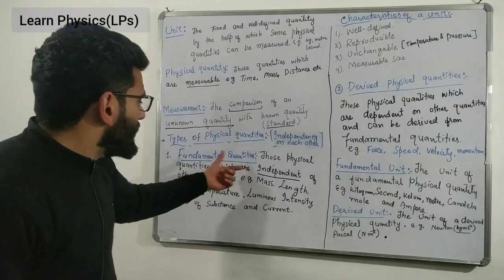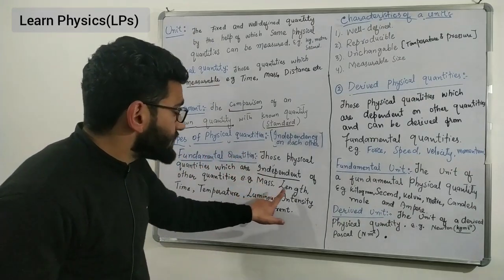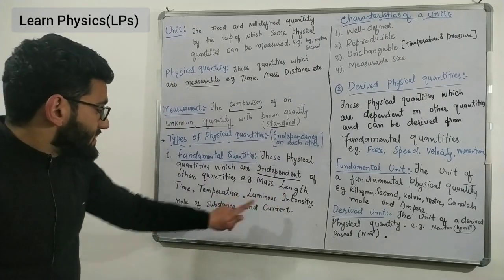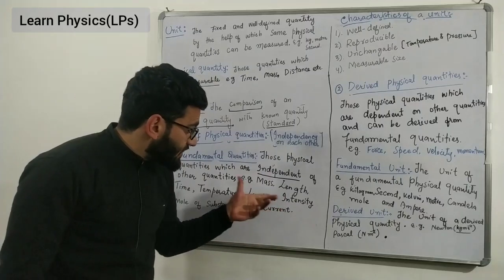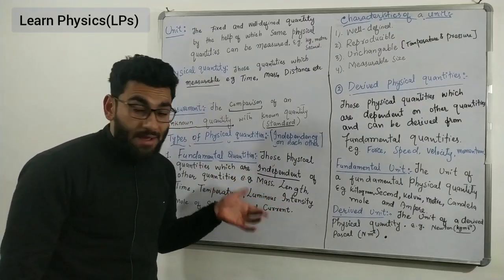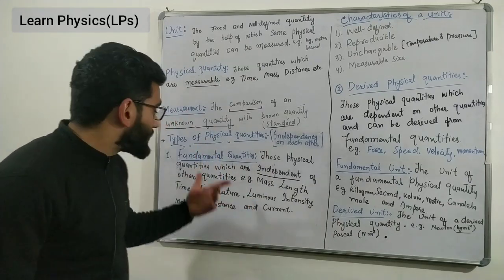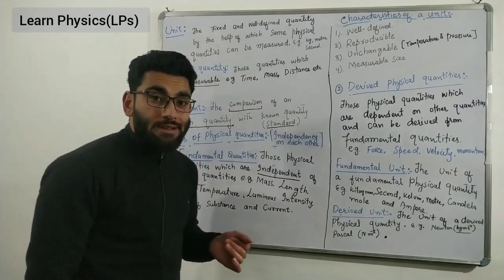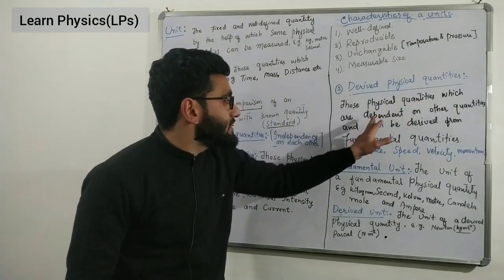In physics we have seven fundamental quantities: mass, length, time, luminous intensity, temperature, mole of substance, and current. These are seven physical quantities that are the basic quantities, which is why we call them fundamental quantities.